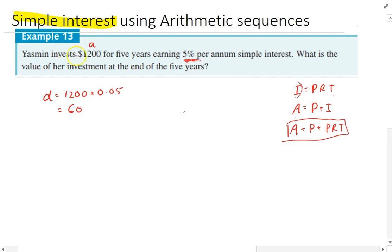All right, so that means that you invest $1,200 for five years. You're earning 5% per annum, which is $60 every year. And we want to know what is the value of her investment at the end of the five years.